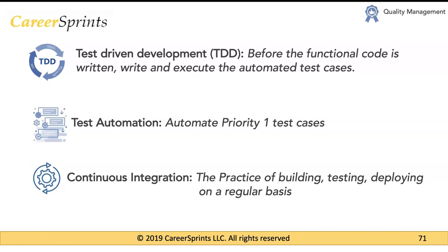Test-driven development is a development method where you first write the test case and then write just enough functional code so that it passes the test. The advantage is that you write only the code needed to pass the test. Because you write the test case first, you are thinking from the end user's perspective and are focused on achieving a successful outcome that satisfies the end user or customer.